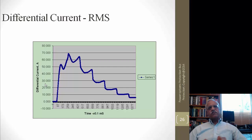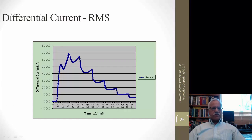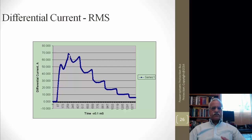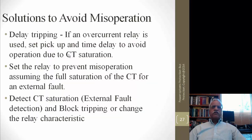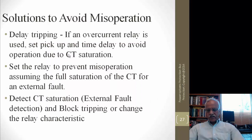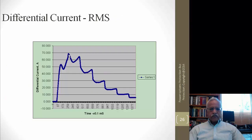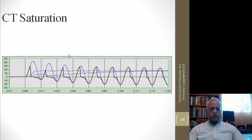As a result, we get an unbalanced current — in this example, 70 amperes RMS — due to CT saturation of CT4. So what is the solution for avoiding the effects of CT saturation?